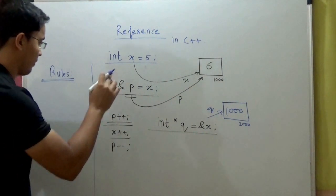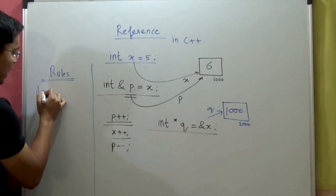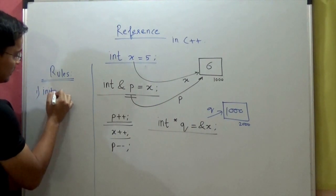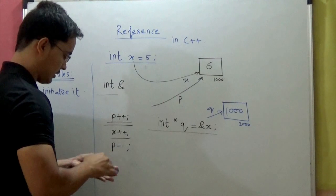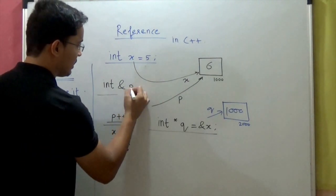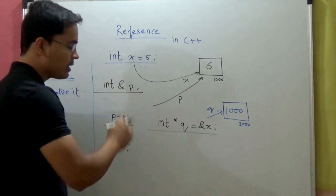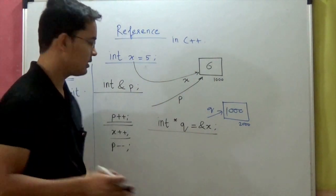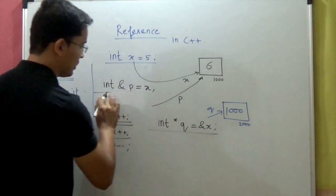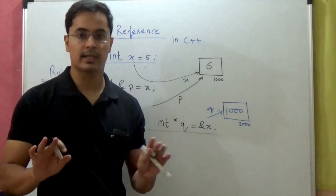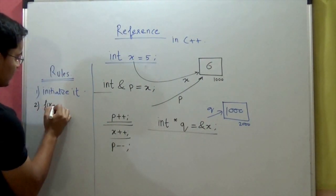There are certain rules for using references in C++. First rule: you have to initialize it. You cannot just declare a reference like: int ampersand p, with no initialization. This is not allowed. The moment you declare your reference, you have to initialize it with some variable. And it's a fixed connection — reference is a fixed connection.